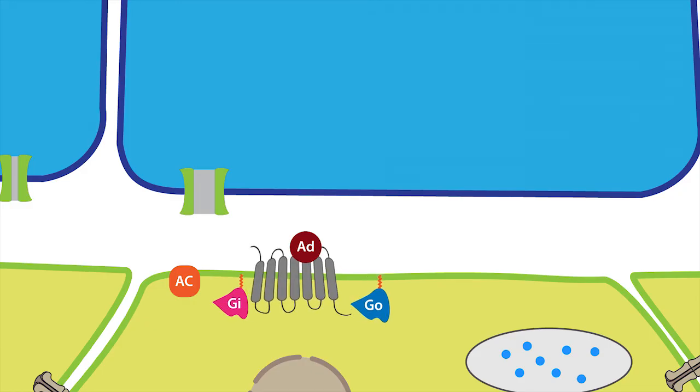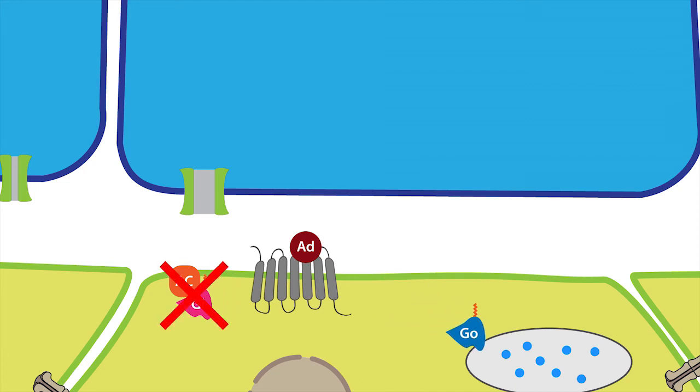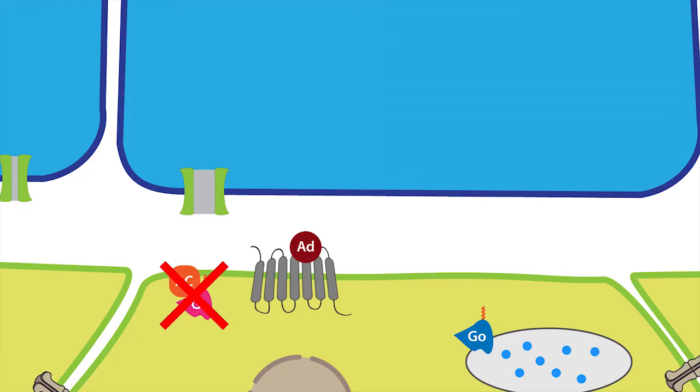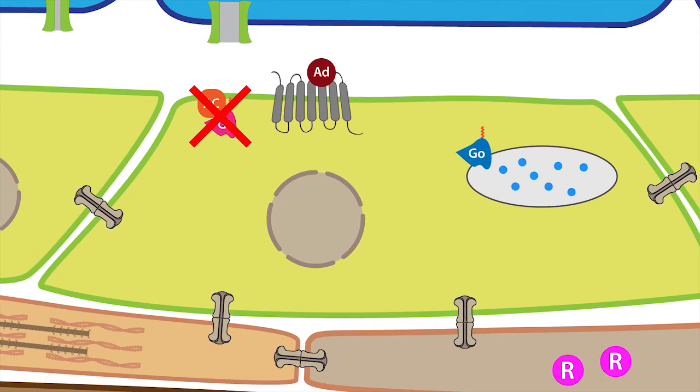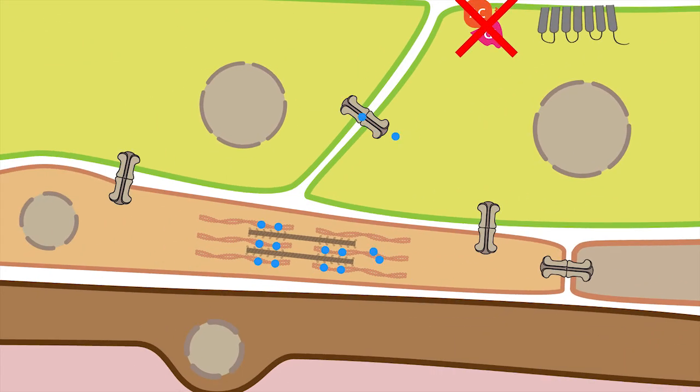Activation of the small Gi protein leads to the inhibition of adenylate cyclase, while the activation of the small Go protein leads to an increase in intracellular calcium. Calcium quickly spreads to neighboring extraglomerular mesangial cells, smooth muscle cells, and granular cells via gap junctions. The rise in intracellular calcium within the smooth muscle cells causes the myofilaments to contract.